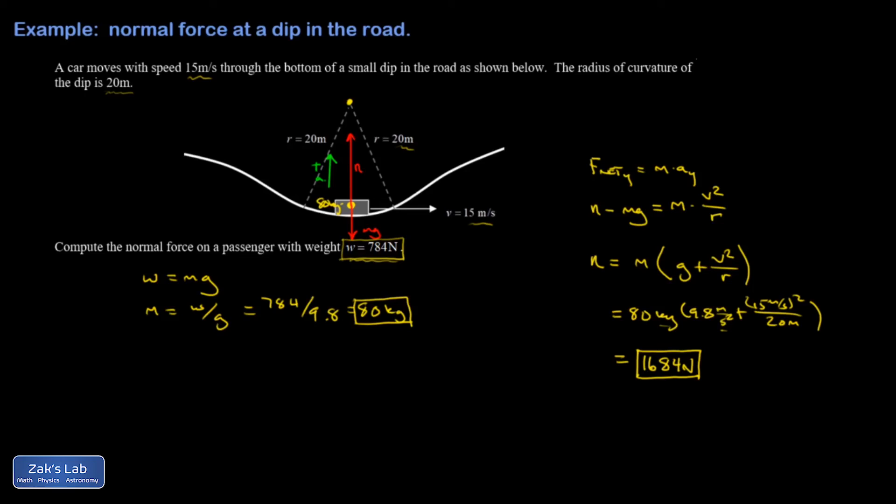I could even express it as a multiple. I'm just taking 1684 divided by 784. And this is 2.14 times or 2.15 times their normal apparent weight. Another way to say it is they're pulling 2.15 g's of acceleration.